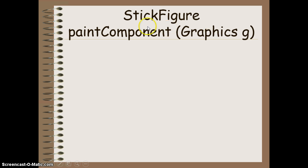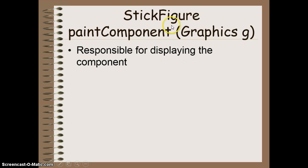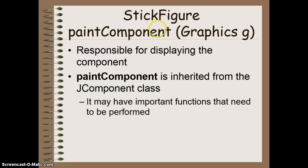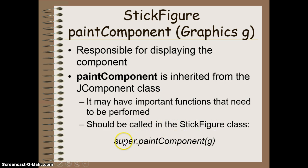So once we've done the constructor, we then need to go back and override that paintComponent method. This is the method, as I said before, that's responsible for displaying the component on the screen. It basically determines what it's going to look like. The paintComponent method is inherited from the JComponent class. And we have to make sure that we're going to call this version from the JComponent class because it may have some important functions that need to be performed to make the overall component display in the first place. So therefore, in our Stick Figure class, we still have to call the super.paintComponent method so it can draw whatever it needs to draw before we draw our things on top of it.